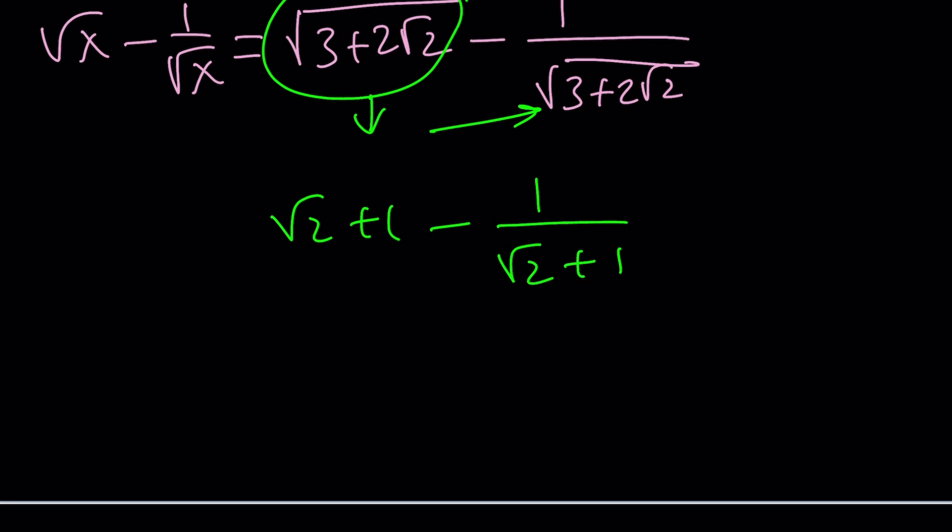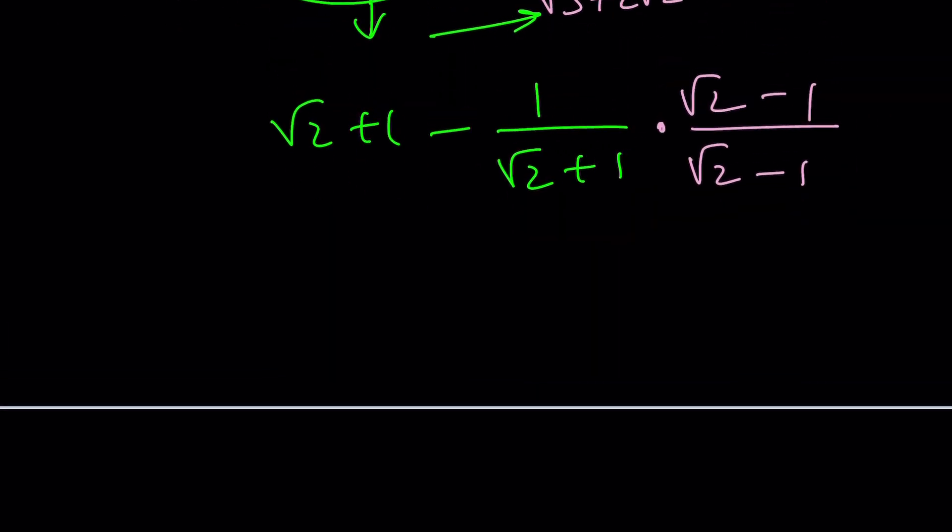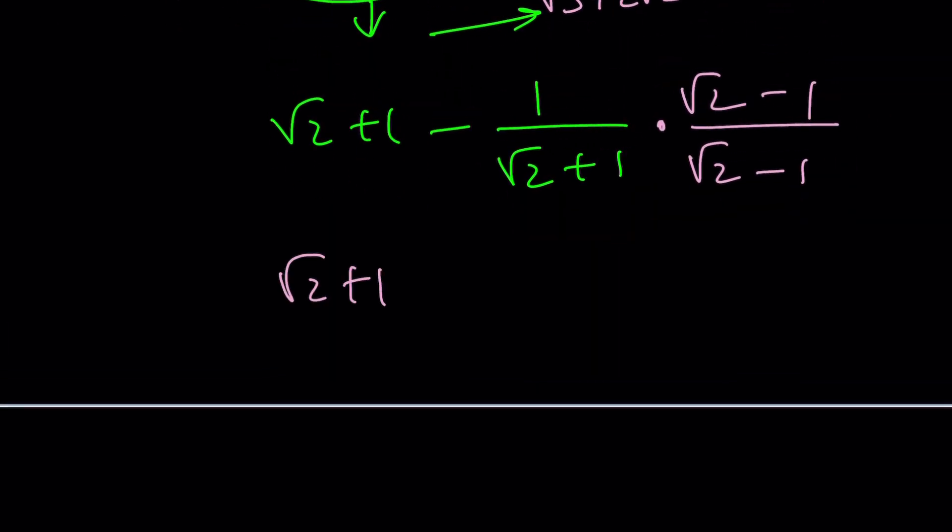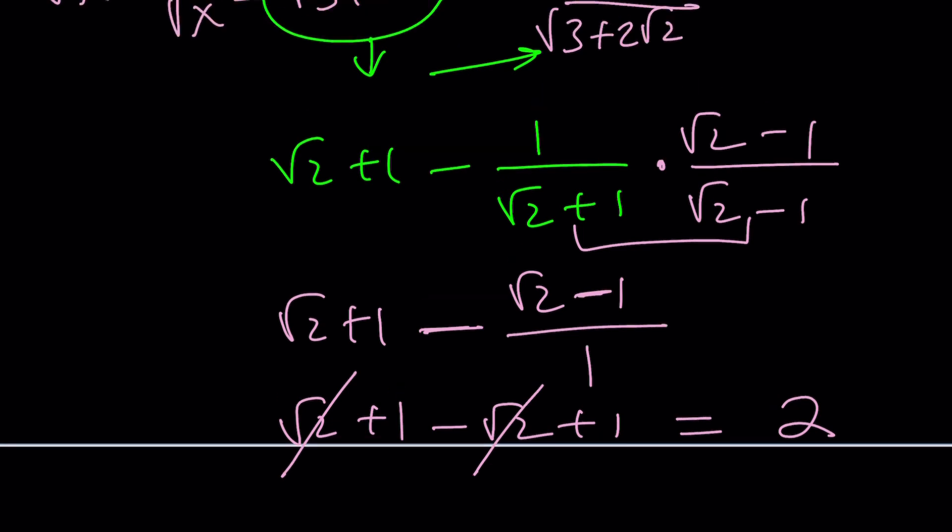So it's going to be root 2 plus 1 minus 1 over root 2 plus 1. Now here we do need radical conjugates. Let's multiply top and bottom by root 2 minus 1. And that gives us root 2 minus 1 in the numerator, and the denominator will be from difference of 2 squares, 2 minus 1, which is 1. So this turns into root 2 plus 1 minus root 2 plus 1. Double negation turns that minus 1 into a plus 1. Root 2 cancels out and we end up with 2 as the answer.